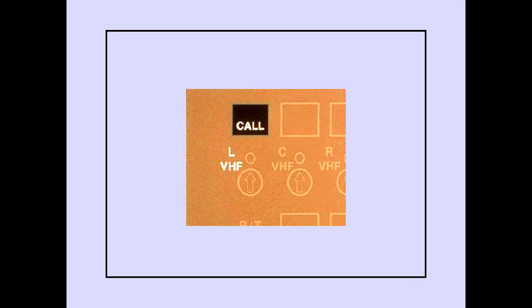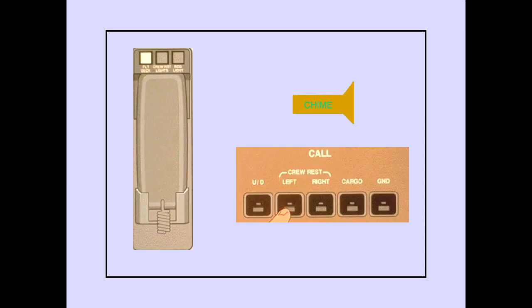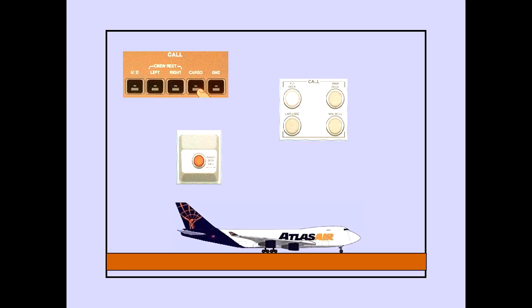To extinguish the call indication and reset the system, push the associated transmitter selector, or, if already selected, push a push-to-talk switch. Pushing the upper deck or crew rest left or right switches on the pilot's call panel sounds a chime and illuminates a call light at the respective location. Pushing the cargo call switch illuminates the flight deck call switches on the load master amplifier panels and wing inspection stations on the main cargo deck. A tone also sounds on the main cargo deck.